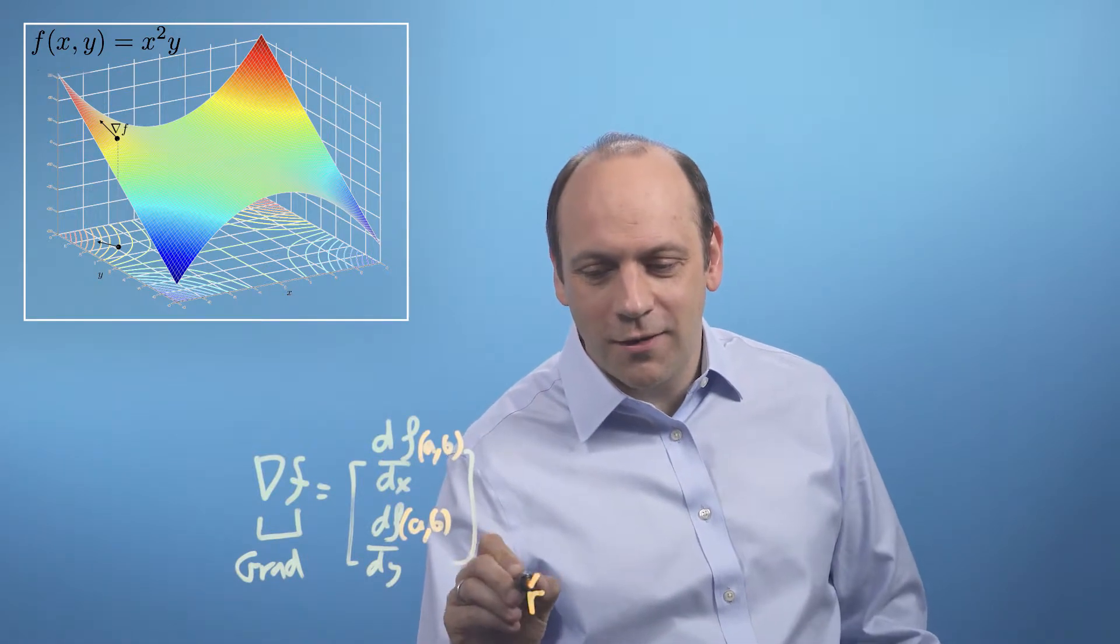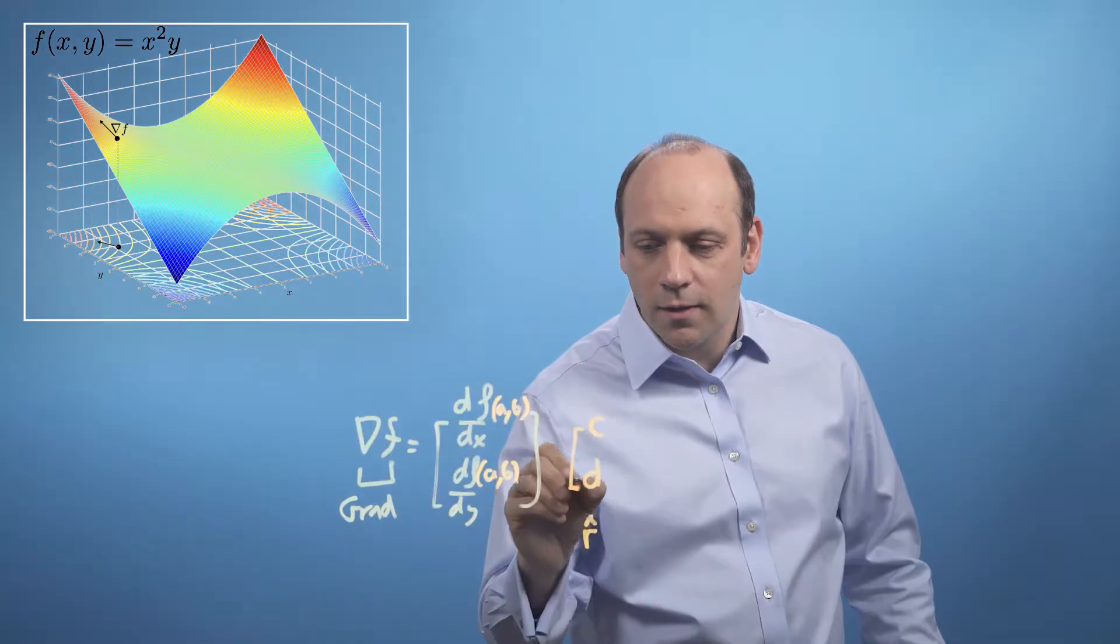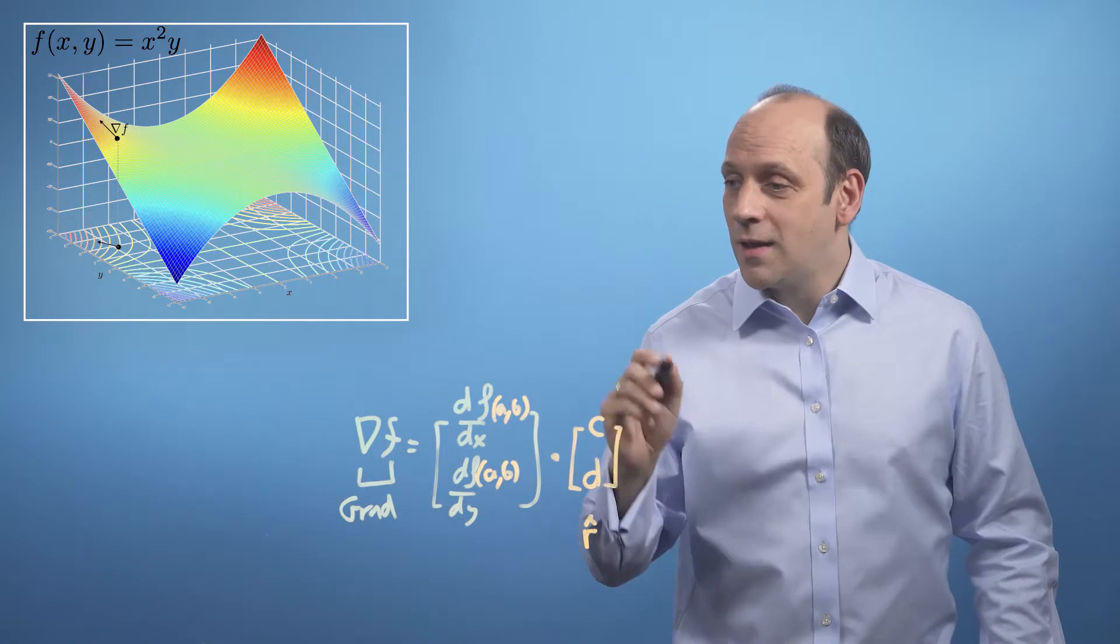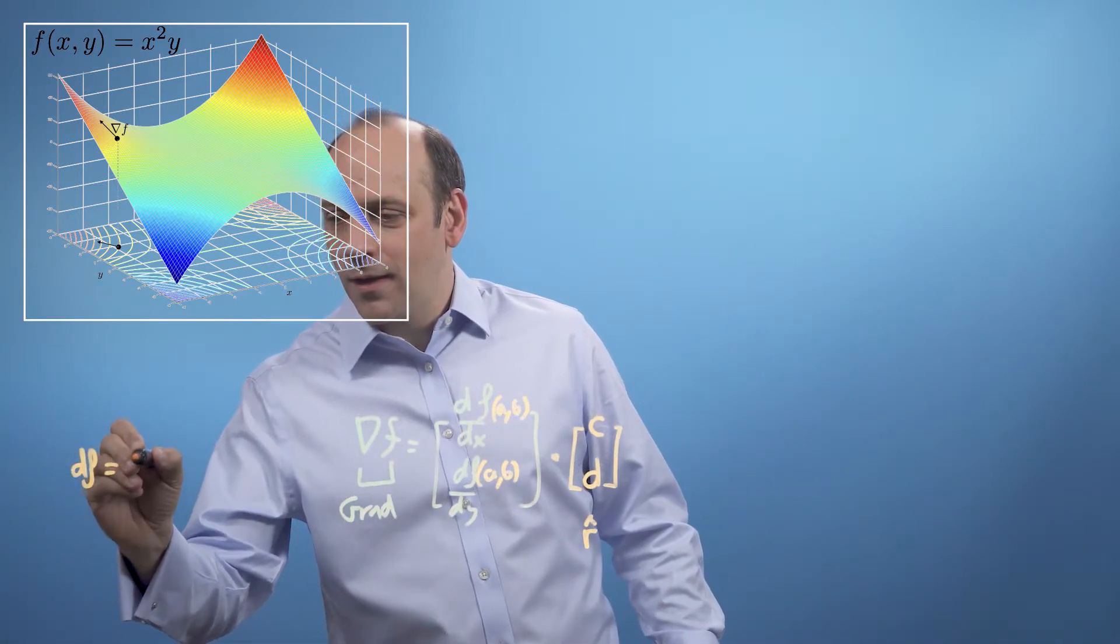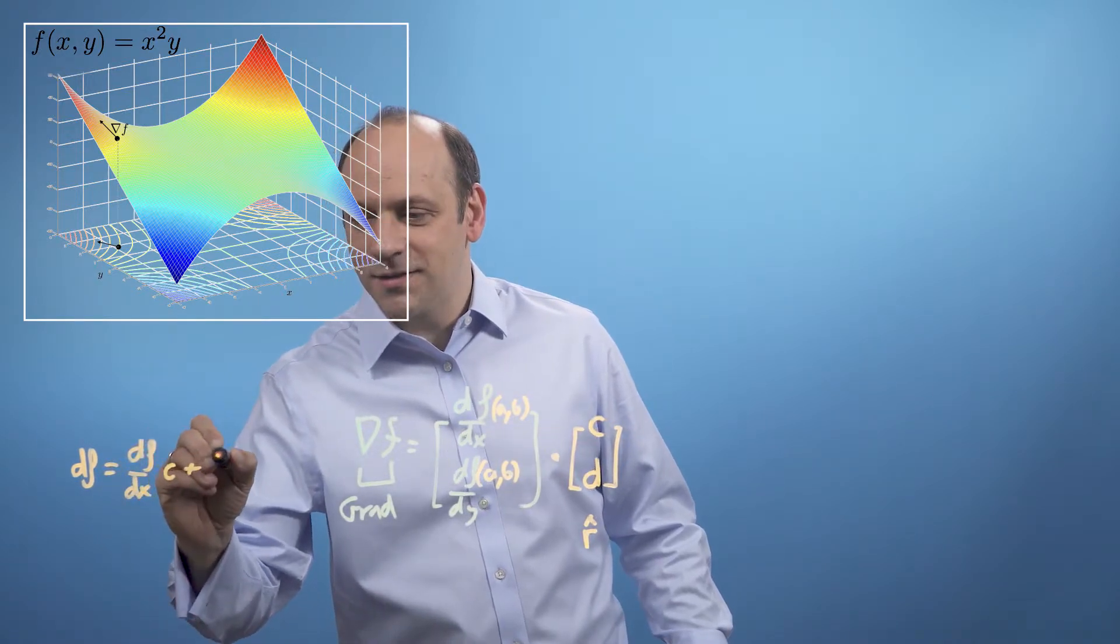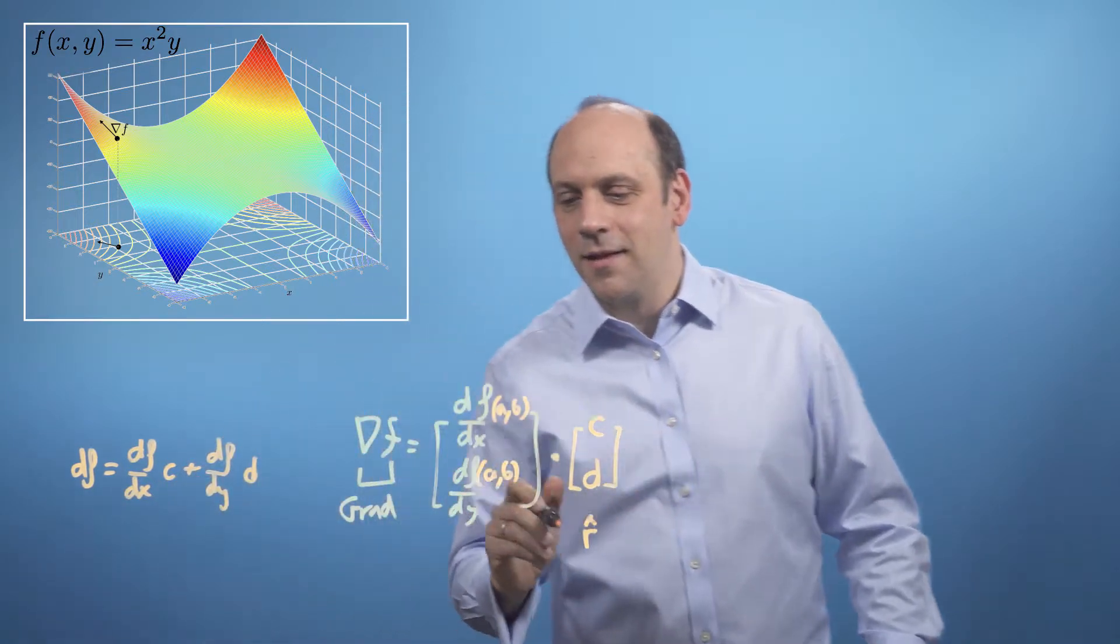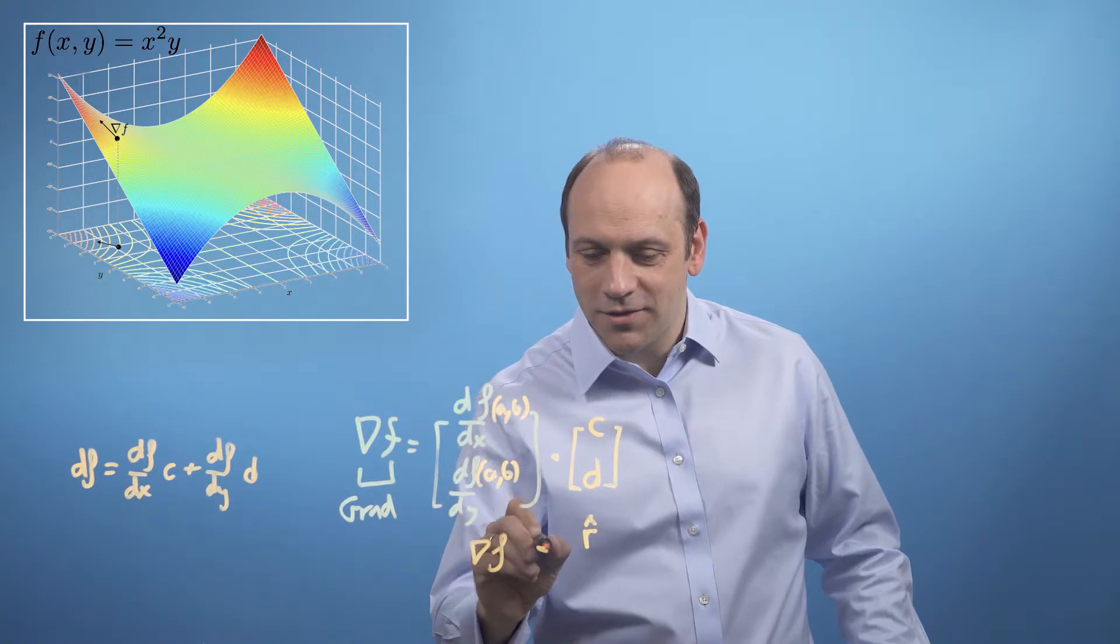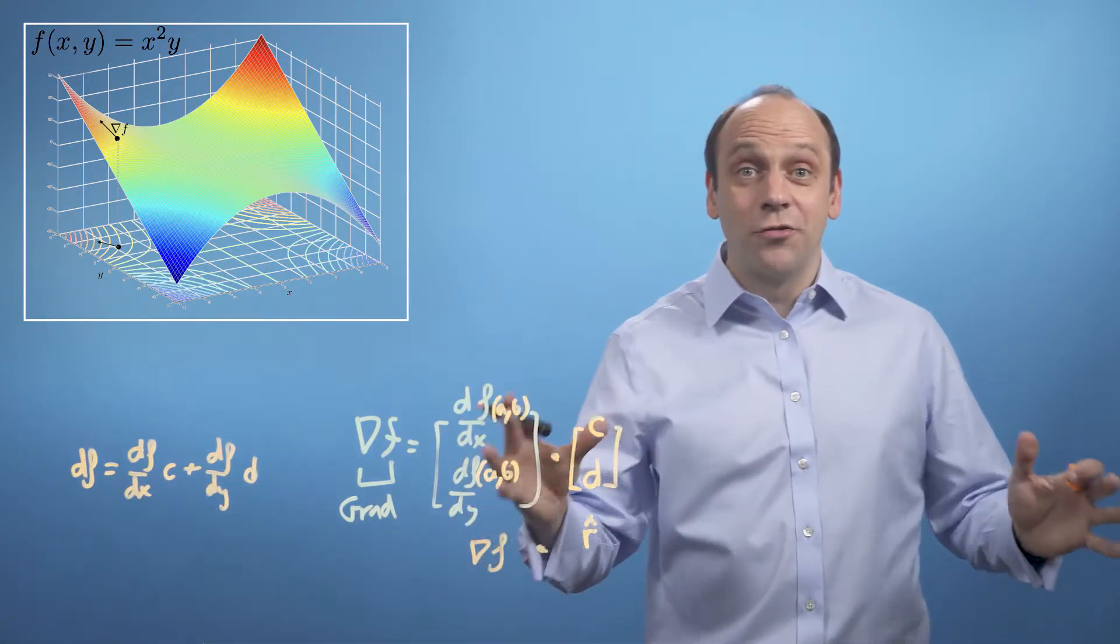So c squared plus d squared is equal to 1. So df is going to be df dx times c plus df dy times d. So what we're doing here is we're doing grad of f dotted with r hat. And we call this thing the directional gradient.